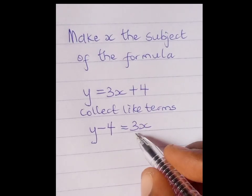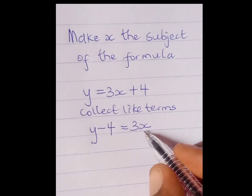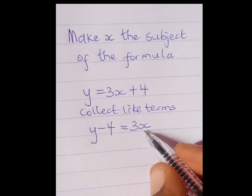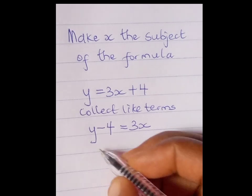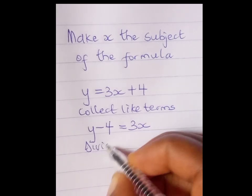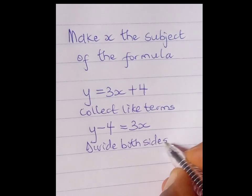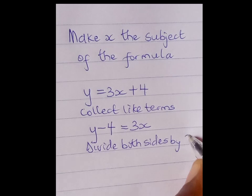Now, we have 3x here. 3 is the number that is obstructing x. So what we are going to do now is to divide both sides by 3.